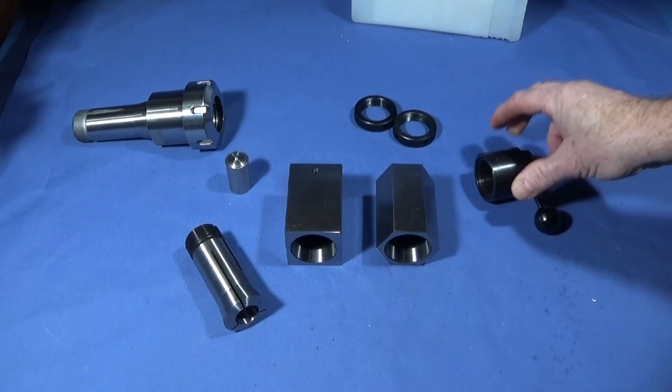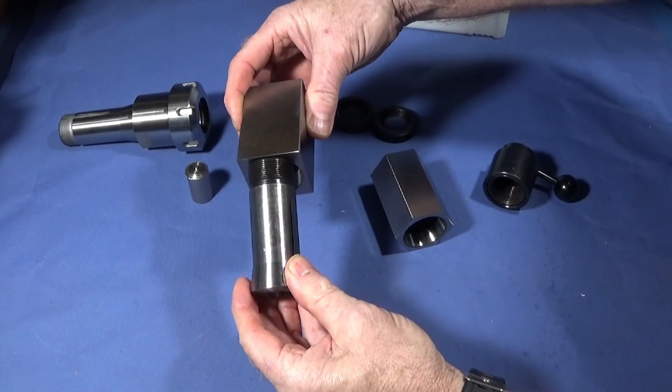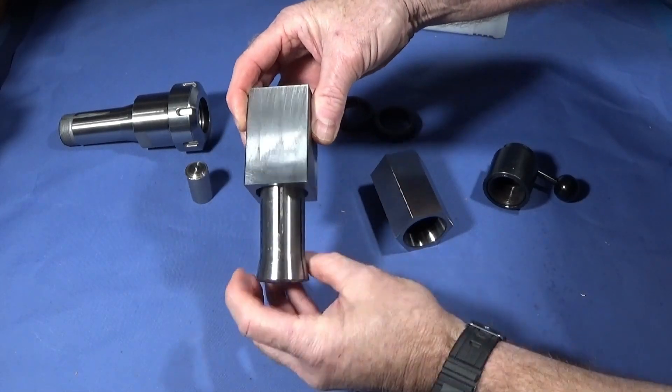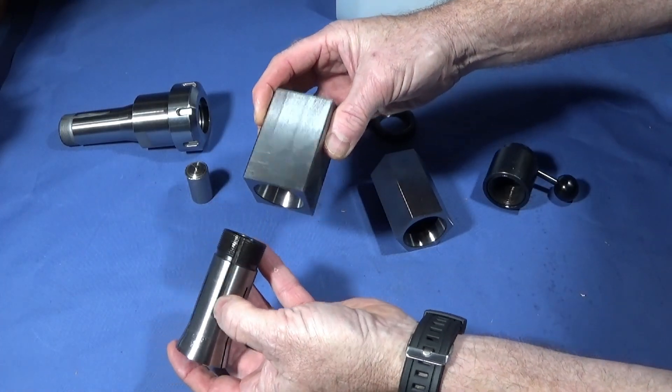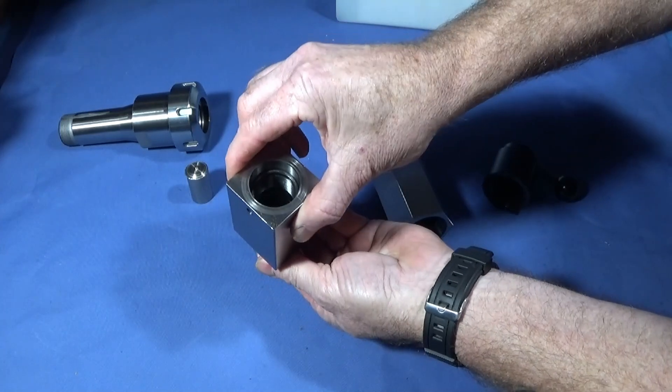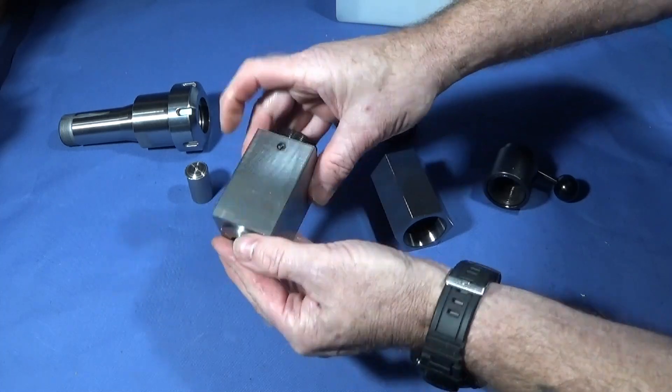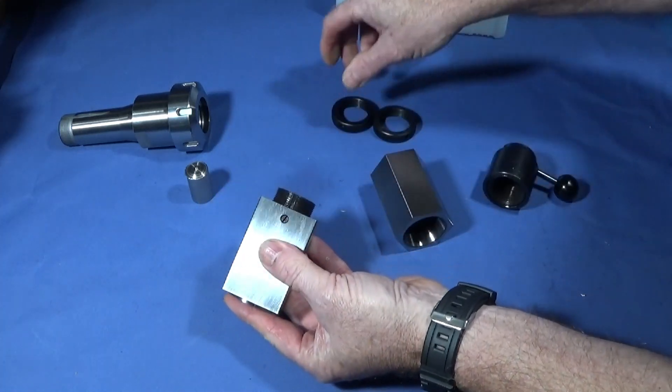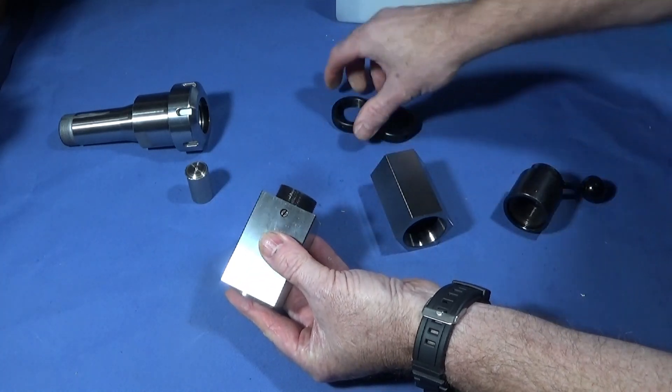The collet goes into the housing. The 5C collets have this groove on here, as you know, and that one locates on the lug screw on the inside. You can fully adjust that one.